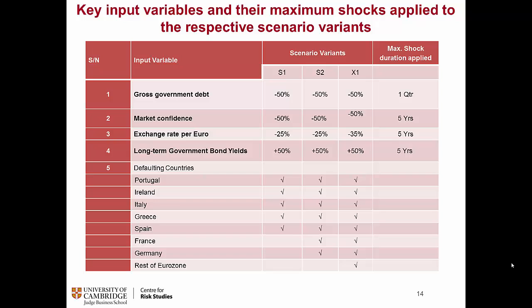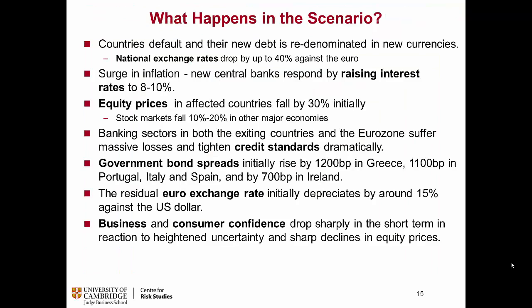To emphasize: in Scenario 1, five countries exit. In Scenario 2, stronger nations — namely France and Germany — are also affected. In the more extreme scenario, we simply increase the shock variables. As a consequence of these shocks to the key economic variables, we see various depreciation in equity prices, increasing corporate bond spreads, and reduction in consumer confidence.